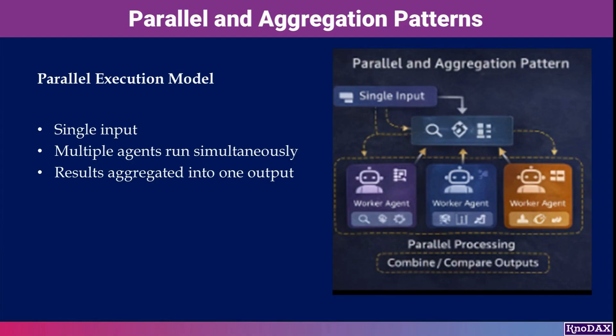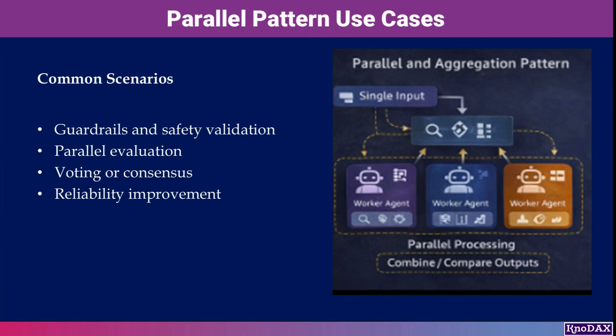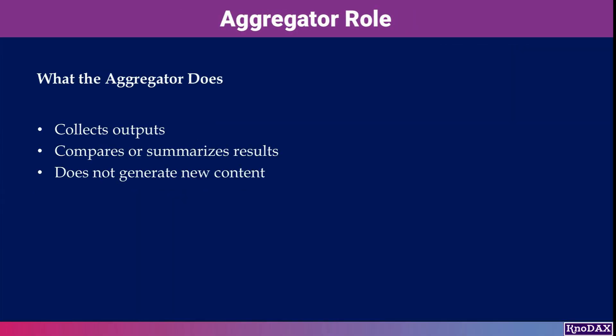In some cases, multiple agents run in parallel on the same input. Each agent processes the task independently and their results are aggregated. This pattern is useful for guardrails, safety checks, parallel evaluations, or voting systems — any scenario where multiple independent judgments improve reliability.